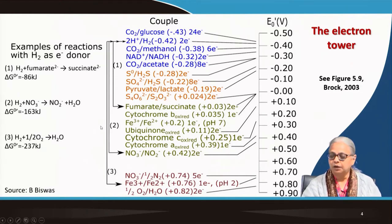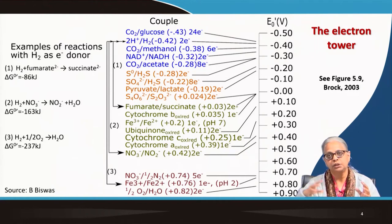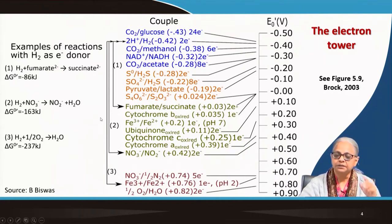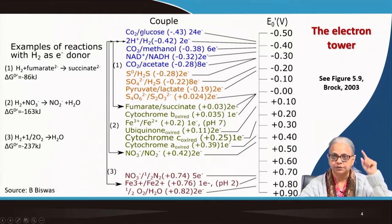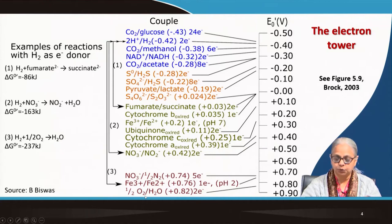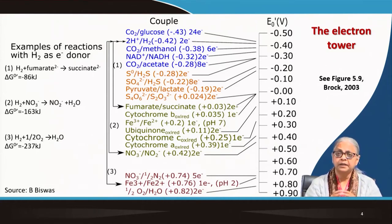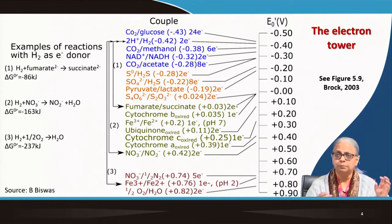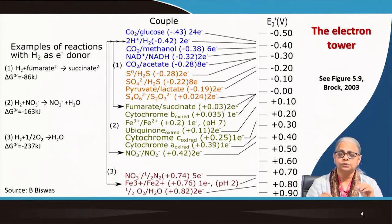If you have glucose plus oxygen going to CO₂ and water, that is a combination of two half reactions — glucose at the top and O₂ going to water at the bottom. The highest release of energy happens in aerobic respiration when you have a compound like glucose combining with oxygen and going to CO₂ and water.